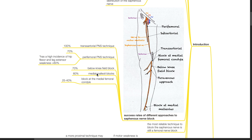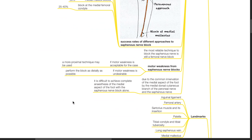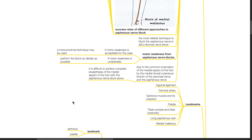Success rates of different approaches: transsartorial approach 100%; perifemoral PNS technique 70%, though with a high incidence of hip flexor and leg extensor weakness up to 60%; below-knee field block 70%; medial malleolus block 60%; block at the medial femoral condyle 25–40%. The most reliable technique remains the femoral nerve block. Regarding motor weakness: if acceptable, a more proximal technique may be used; if undesirable, perform the block as distally as possible. Due to shared innervation of the medial foot by the medial dorsal cutaneous branch of the peroneal nerve and the saphenous nerve, complete anesthesia of the medial foot with saphenous block alone is difficult.